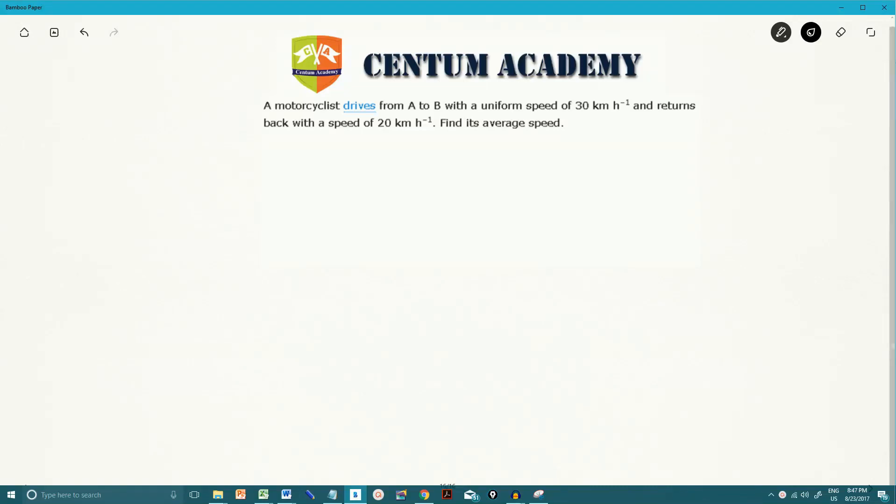Hello friends. So in this question, it's given that a motorcyclist drives from point A to point B with a uniform speed of 30 kilometers per hour and returns back with a speed of 20 kilometers per hour. We have to find out its average speed.